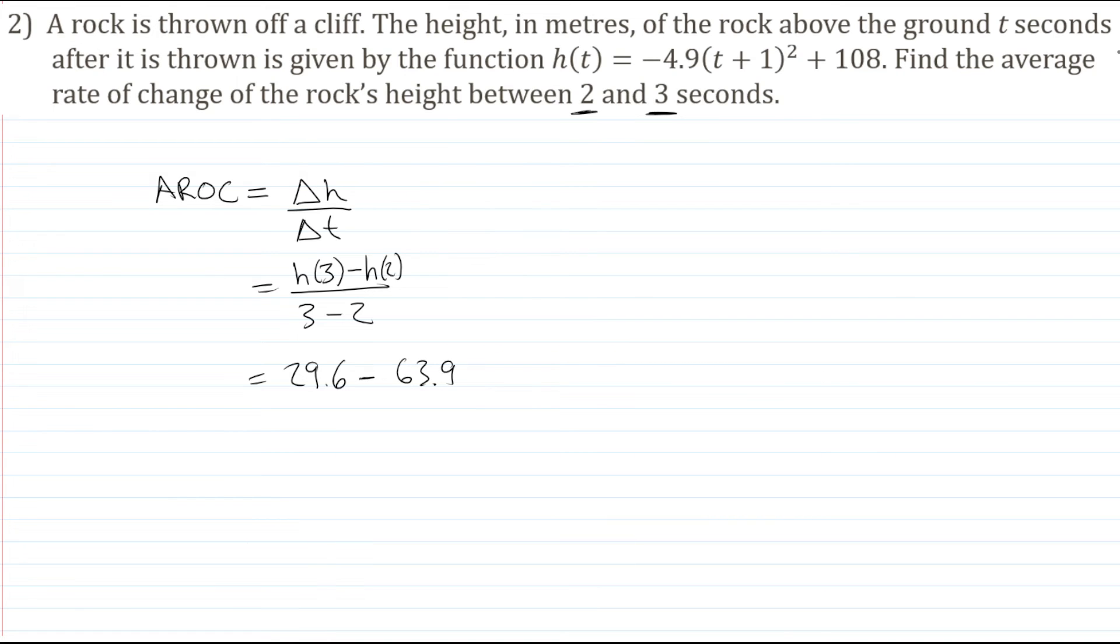And I'm subtracting those two values. I want to find the difference over whatever 3 minus 2 is, that's just 1. So we have 29.6 minus 63.9. And of course, if you want to, you can divide that result by 1, but it won't make any difference. We end up with -34.3.